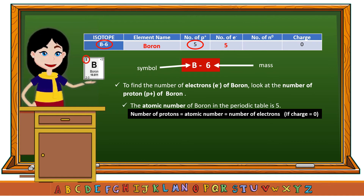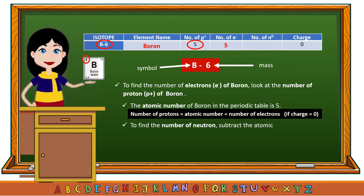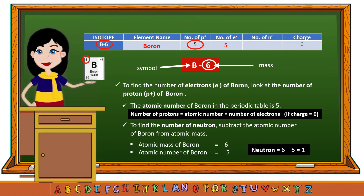To find the number of neutrons, subtract the atomic number of boron from its atomic mass. The number of neutrons of boron equals atomic mass 6 minus atomic number 5, which equals 1. Therefore, the number of neutrons of boron is 1.